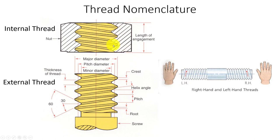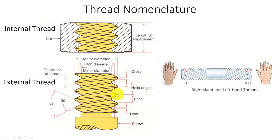A nut typically has so many threads per inch, and that gives us the maximum strength of that fastener. On a coarse thread it's usually 3 to 4, and on a fine thread it's usually 7 to 8. Let's talk about pitch - pitch is the repeating distance from one thread feature to the next. Metric fasteners measure pitch instead of TPI.